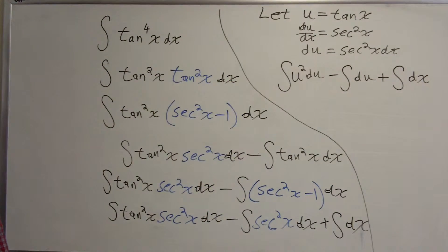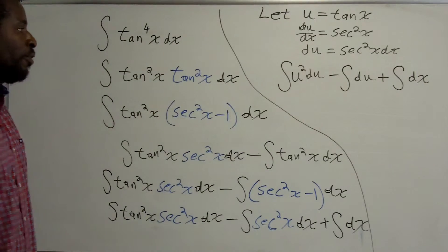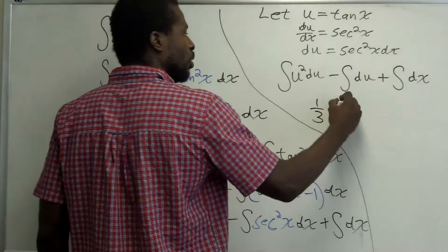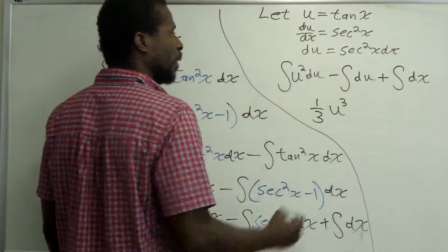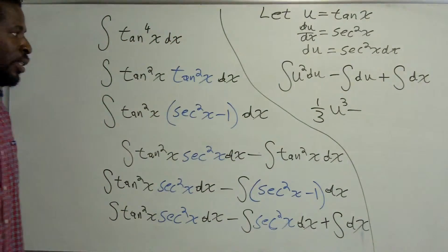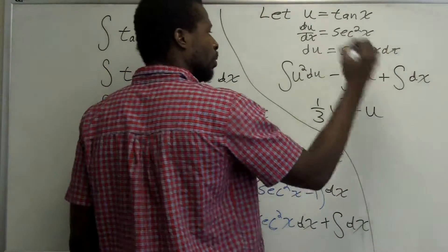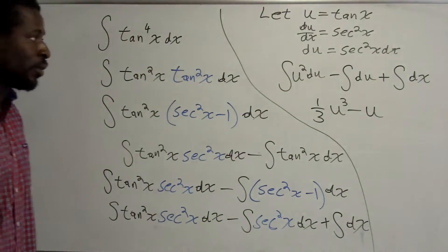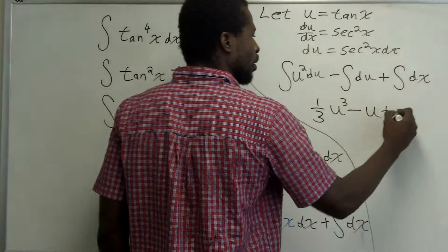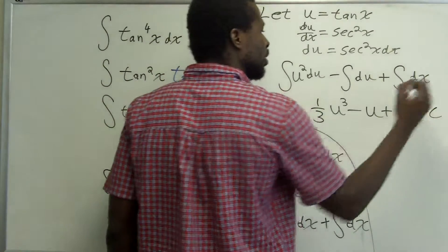Now I'll do my integration. Using the power rule, the first integral gives one-third u cubed. Then integrating du gives minus u. Integrating dx gives x. And we still have plus C.